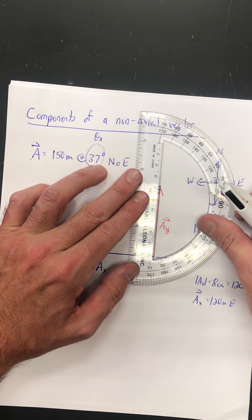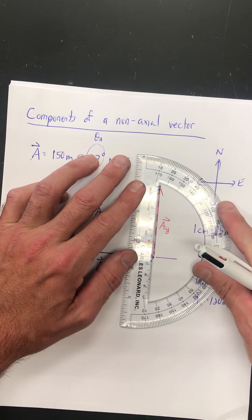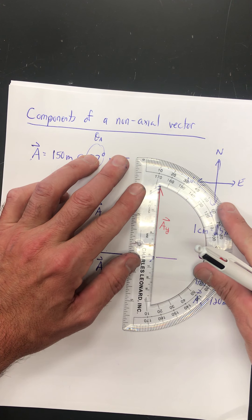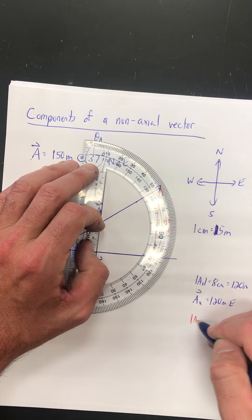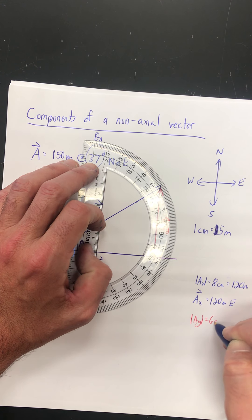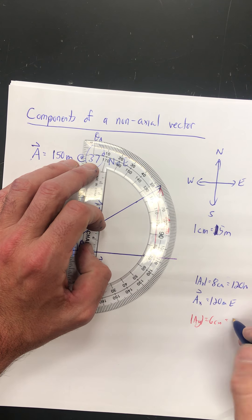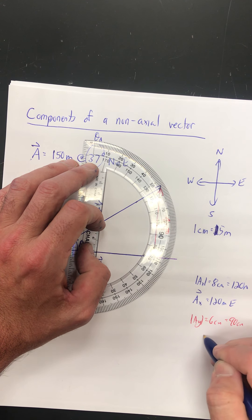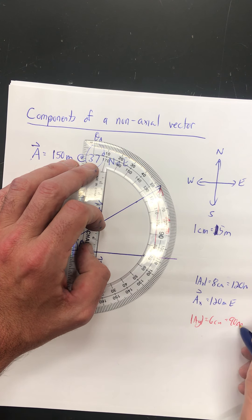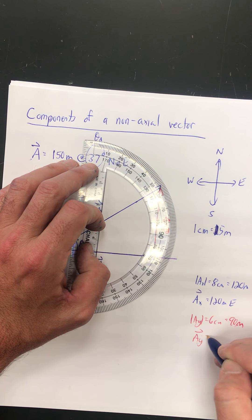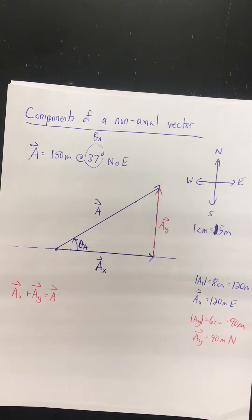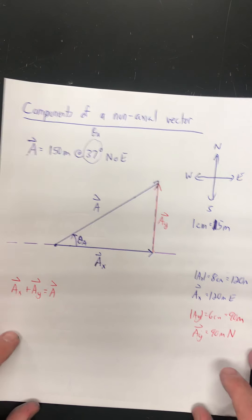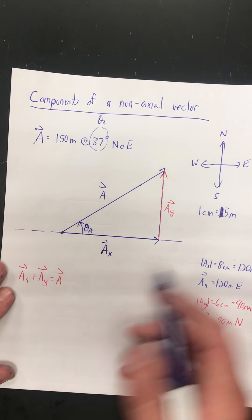Vector A sub y — how much goes vertically? That's a 6-centimeter-long vector, which using our scale is 90 meters, so vector A sub y is 90 meters north. Vector A sub x plus vector A sub y make up vector A through vector addition — that's the concept of components. Now let's do this mathematically without drawing it graphically.